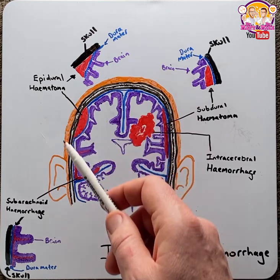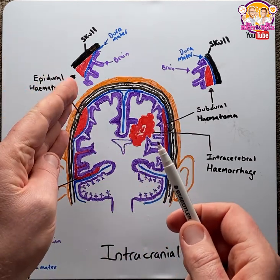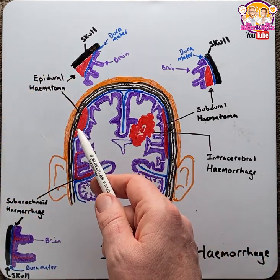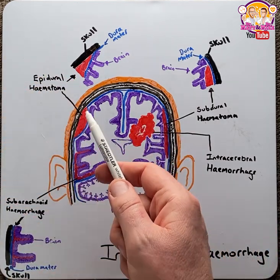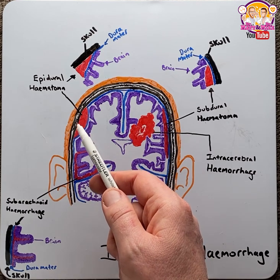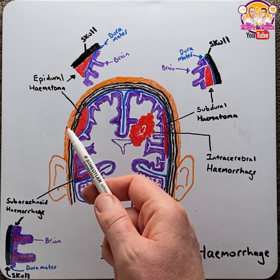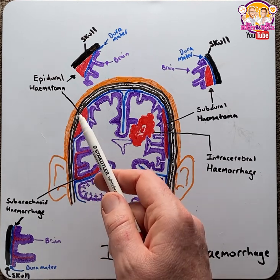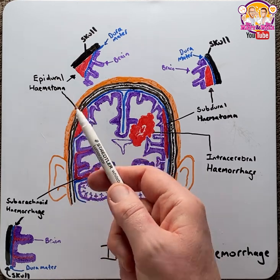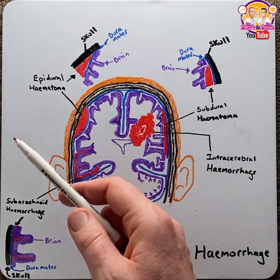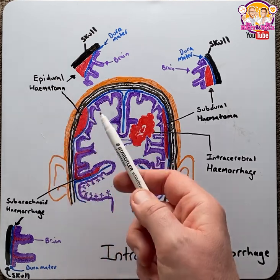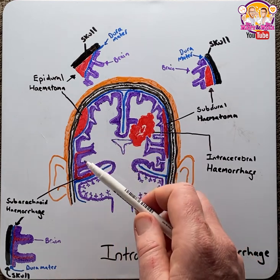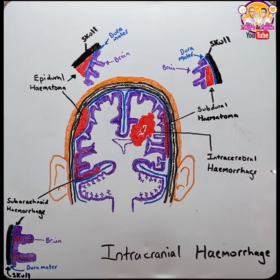The common presentation is a history of head trauma, followed by a loss of consciousness, then a lucid period interval, followed by neurological deterioration accompanied with nausea, vomiting, lethargy, and seizures, which usually is the result of increased intracranial pressure.